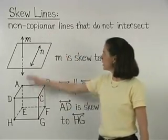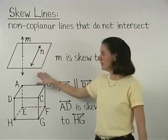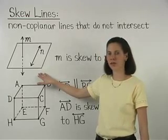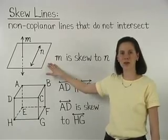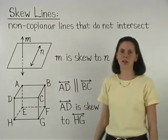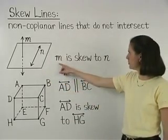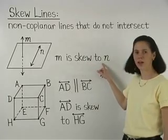For example, lines M and N in the first diagram shown do not lie on the same plane, and they do not intersect. So we can say that line M is skew to line N.